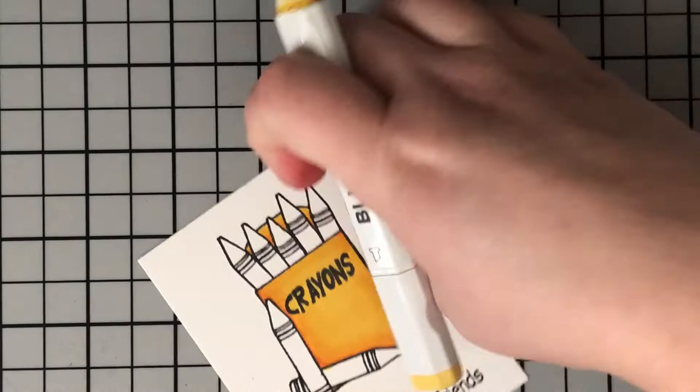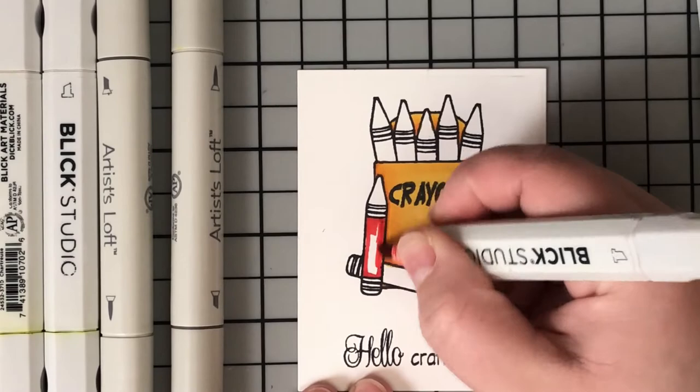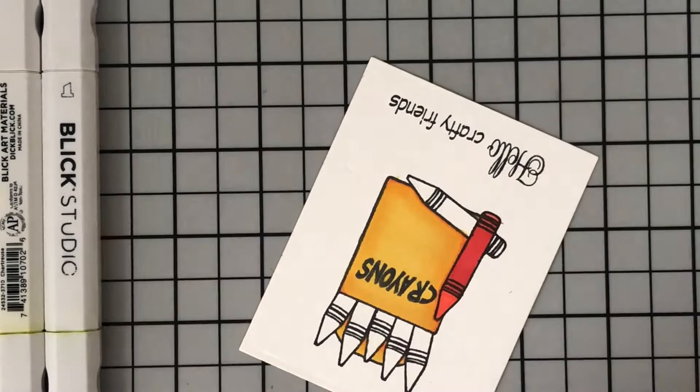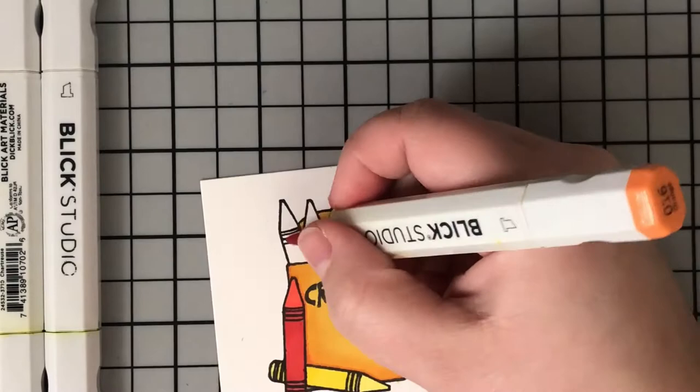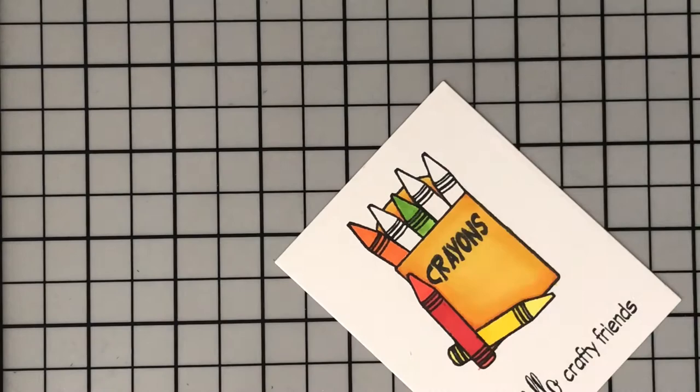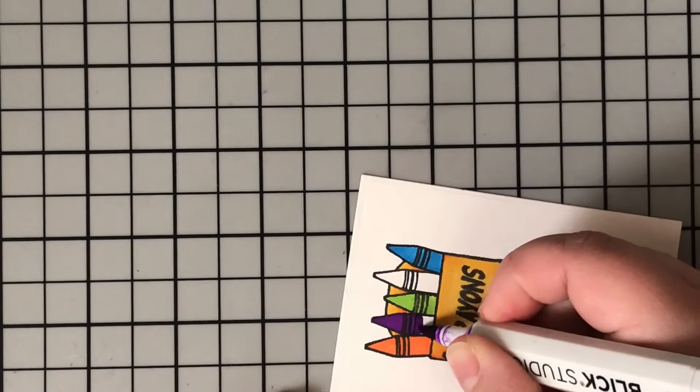Now I started off coloring in these crayons with two different colors. I actually used a darker one on the little paper that would be around the crayon and then a lighter one on the crayon itself. This really did not show up at all, so I just thought, you know what, why go to all that work? I just stuck with one color for the rest of them.